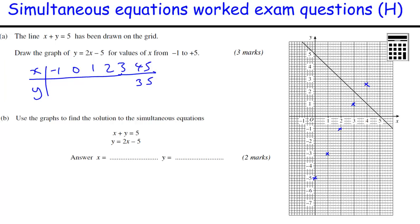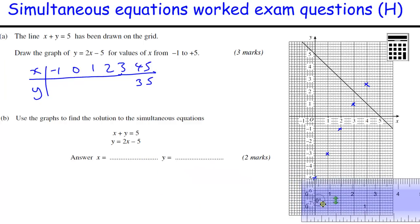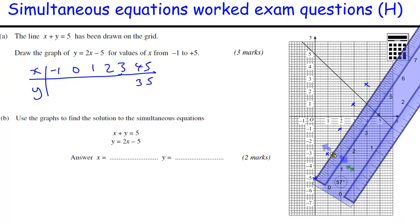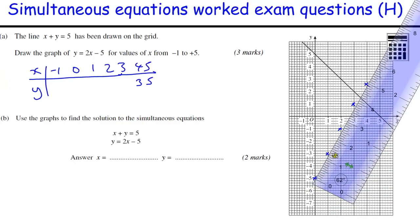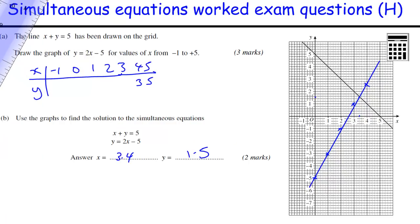Use the graphs to find the solutions to this. So x plus y equals 5 is the one that's drawn. This is the one I've just drawn. Time to bring in a ruler. So where are those two the same? Once at this point here where they cross, which is roughly there, which is 3.4 on the x scale. And here, which is going to be 1.5. You could solve it algebraically, but it does say to use the graph.